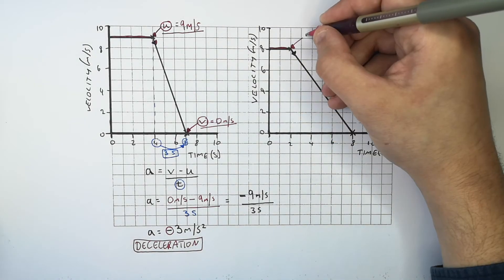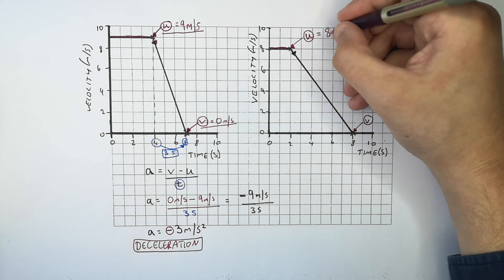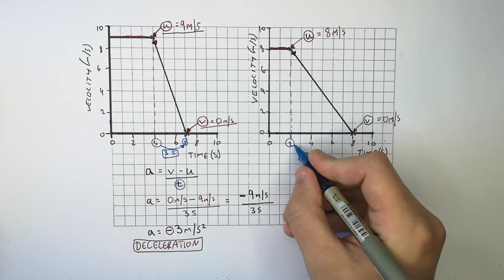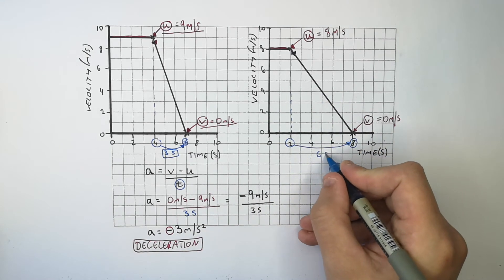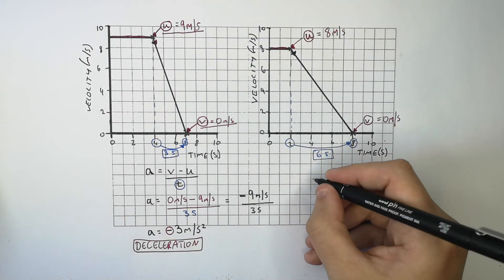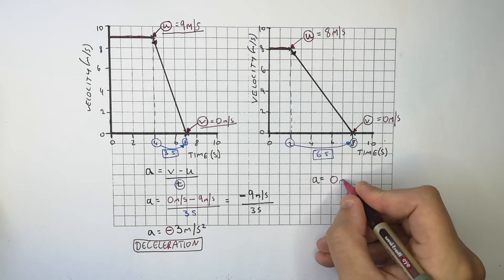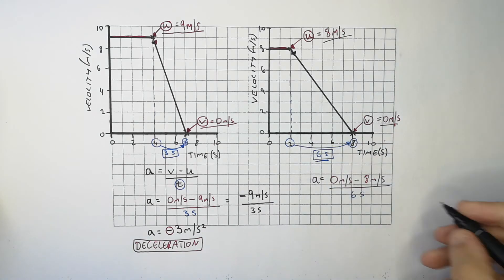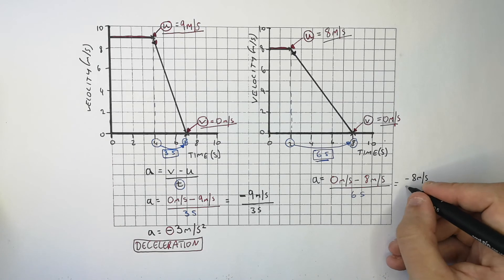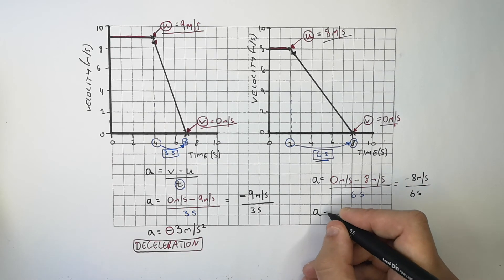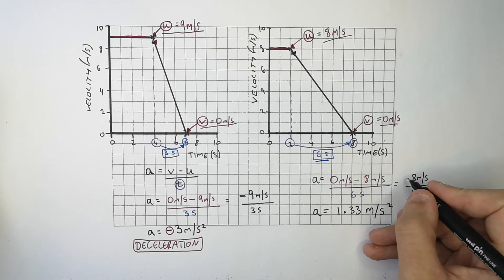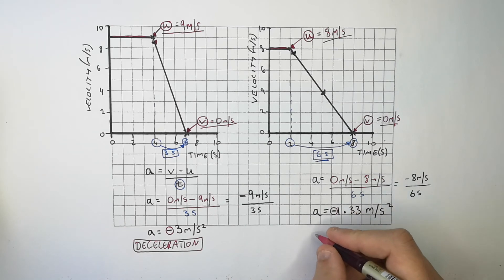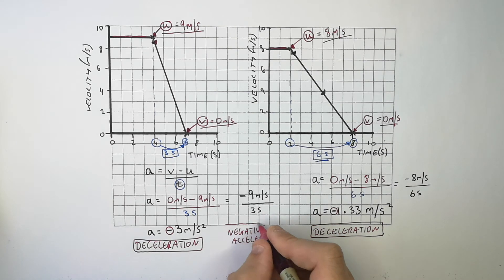Again, identify the initial velocity u and the final velocity v. The initial velocity is 8 metres per second, and the final velocity is 0 metres per second. That gives minus 8 metres per second divided by the time, 6 seconds, giving an acceleration of minus 1.33 metres per second squared. Remember, it's a negative number because there is a deceleration — minus 1.33 metres per second squared. A negative acceleration means the car is slowing down.